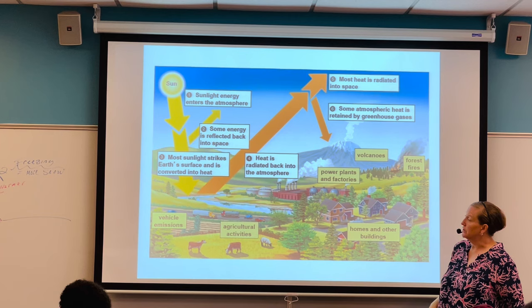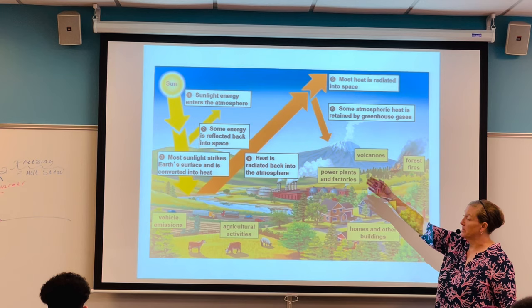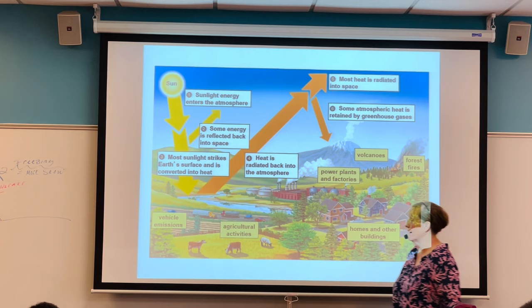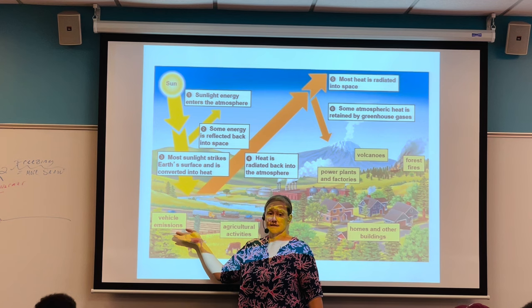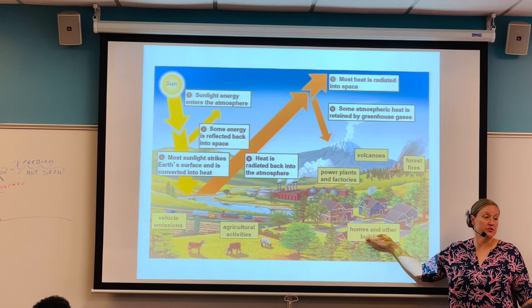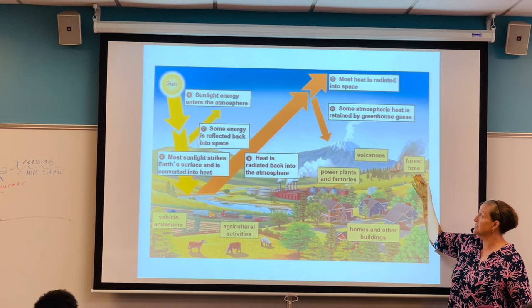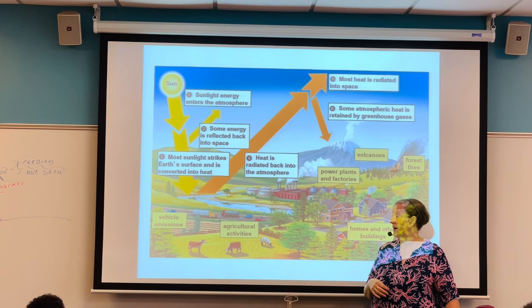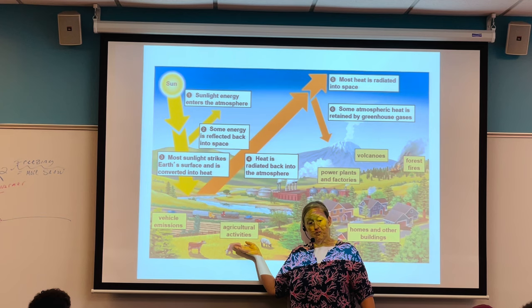The sun is our natural driver of climate, but other things add climate change gases. Carbon dioxide comes from vehicle emissions, cars, power plants, factories, heating and cooling our homes, charging our phones, and volcanic activity. Another driver of climate change is agricultural activity, which adds methane.